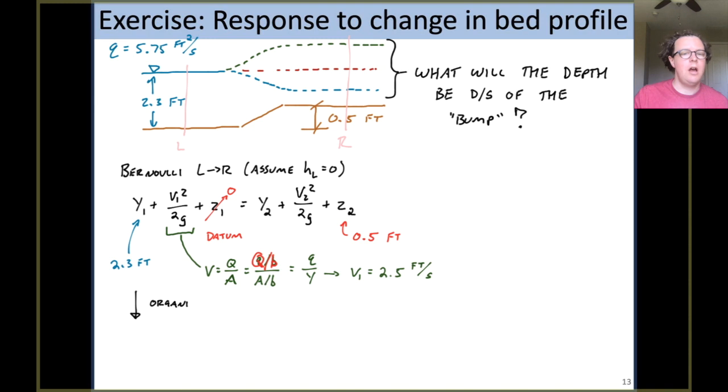So if we take stock of where we are, organize ourselves, combine as many constants as we can, we end up with this equation. Bernoulli tells us that 1.90 must equal the depth on the right-hand side, y2, plus the velocity head on the right-hand side. Now if you're playing along at home, you know this is trouble. We've got one equation with two unknowns in it, so we're not yet ready to get to a solution. So what other things could we use to solve this problem?